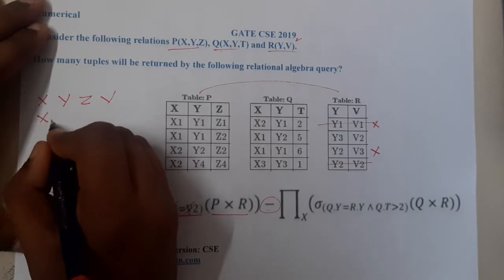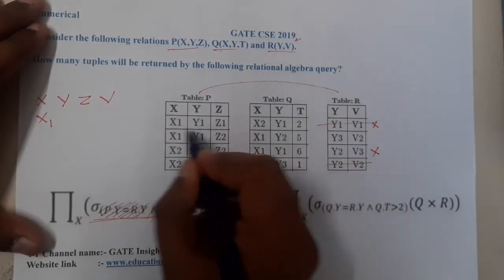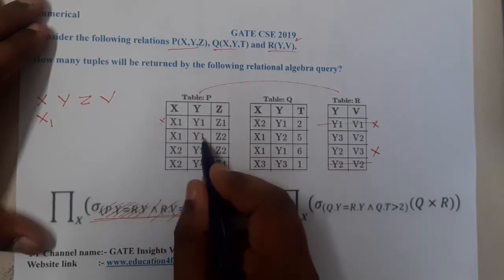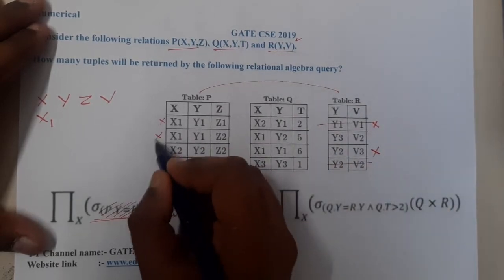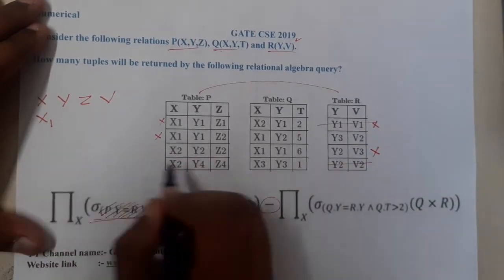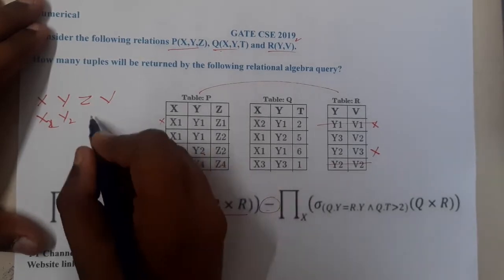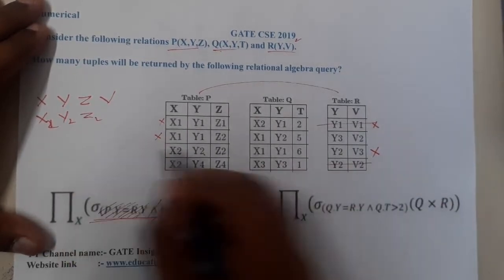X1, so Y1 is not available here, so this row will not get a chance. This Y1 is also not available here, so this also will not get a chance. Here we are having Y2, so it will match. So X2, Y2, okay X2, Y2, Z2, and here we are having...